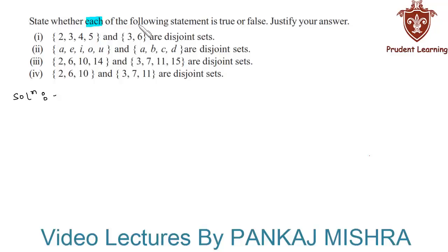State whether each of the following statements is true or false. Justify your answer. In this question, we have some statements and we need to state whether they are true or false along with a justification. As you can see, in each statement we have the words 'disjoint set,' so let's begin with the definition of disjoint sets.